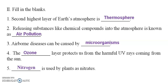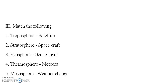The second highest layer of the Earth's atmosphere is the thermosphere. Releasing substances like chemical components into the atmosphere is known as air pollution. Airborne diseases can be caused by microorganisms. The ozone layer protects us from harmful UV rays coming from the sun. Nitrogen is used by plants as nitrate.